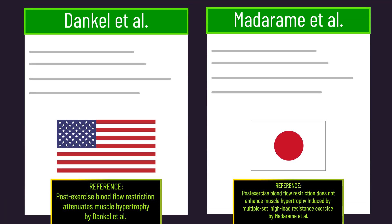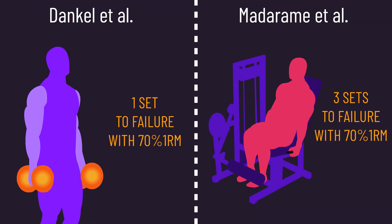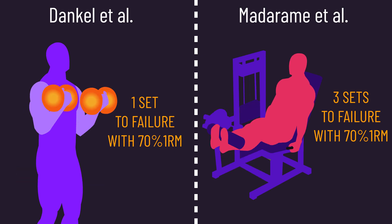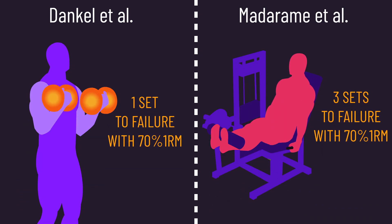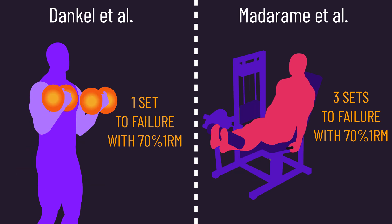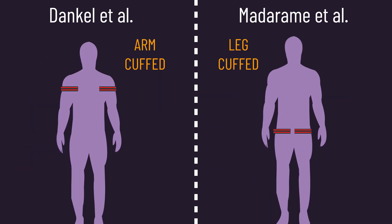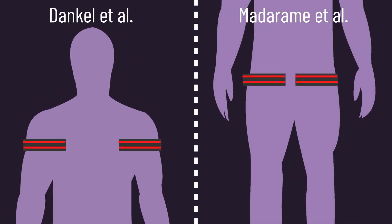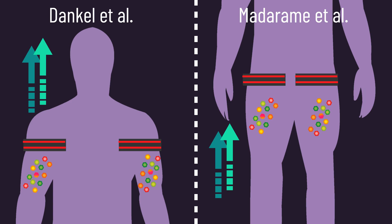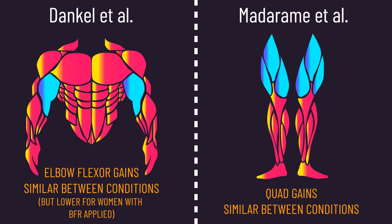Two other papers had two conditions each. One condition involved subjects training normally with sets of reps to failure. The second also involved training to failure, but once completing this, subjects had the trained limb blood flow restricted with a cuff for 3–5 minutes. This blood flow restriction trapped the metabolites in the muscle, and if metabolites were additive for hypertrophy, this condition should see more growth. Yet after 8 weeks, both studies found muscle growth was not enhanced when applying blood flow restriction after training. One paper actually found it reduced muscle growth in the women subjects.